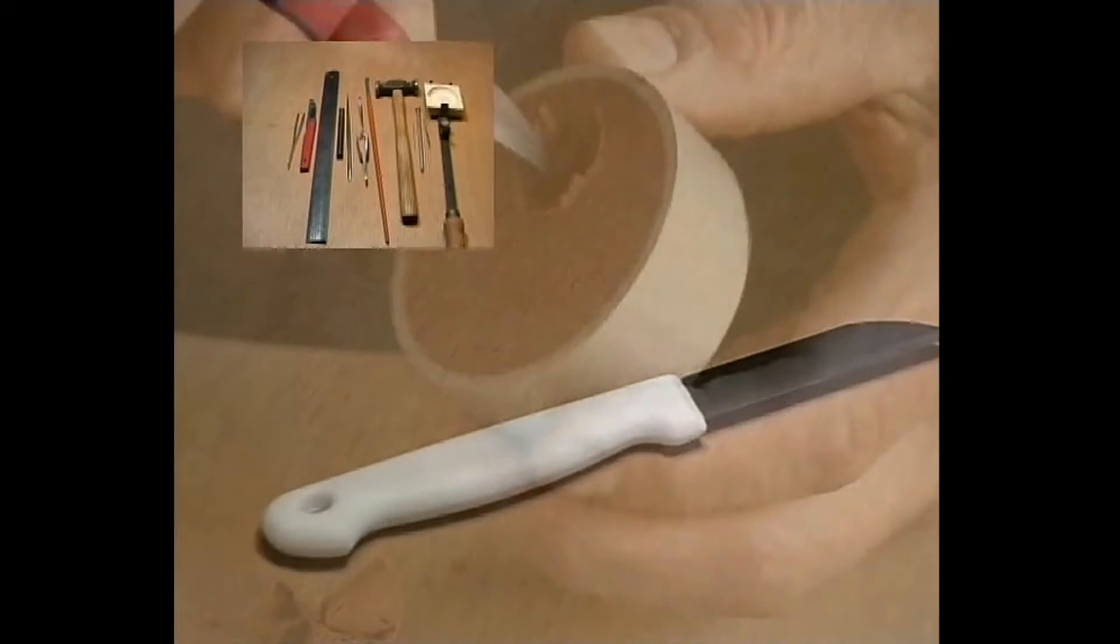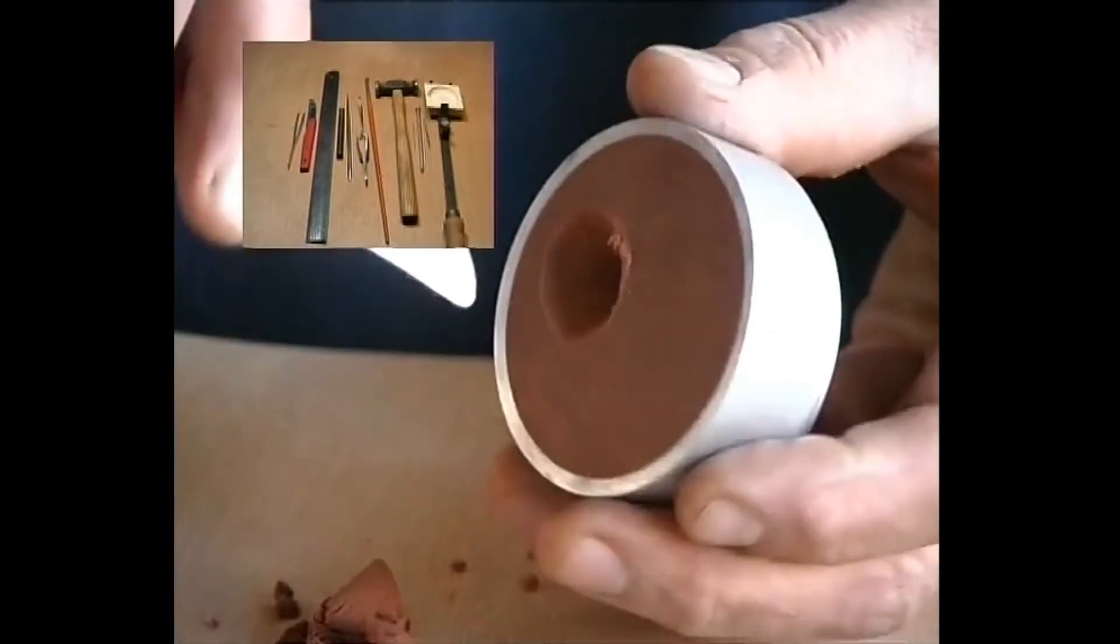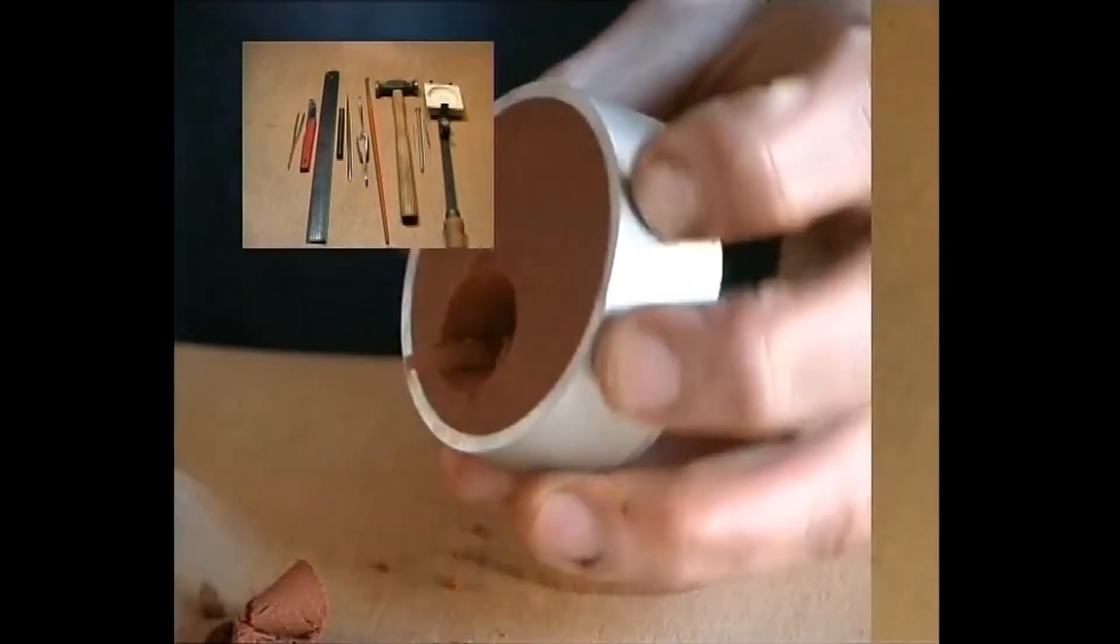The tools that are used to form the mold are the tools that as a goldsmith we normally have on our workbench.